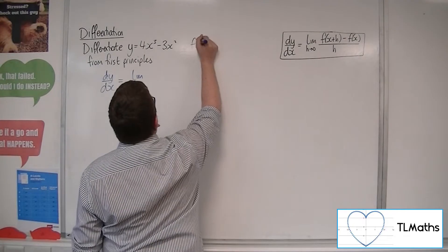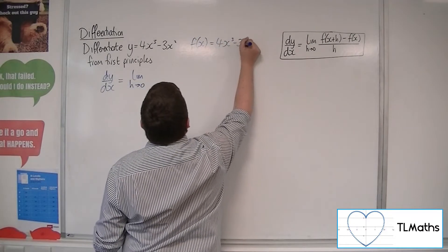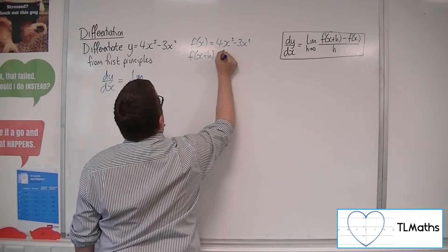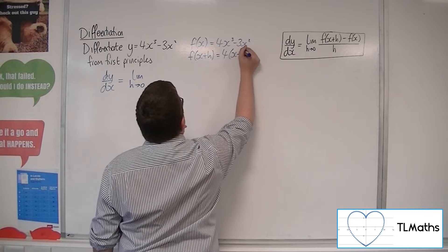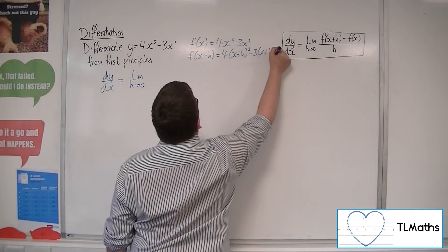So f of x is 4x cubed minus 3x squared, and f of x plus h is 4 of x plus h cubed, take away 3 lots of x plus h squared.